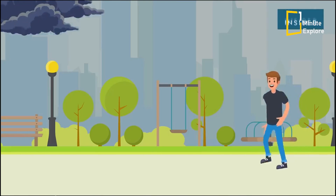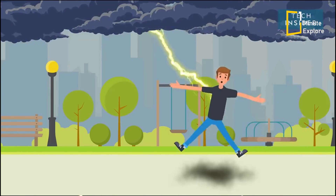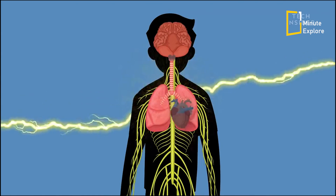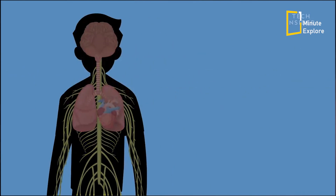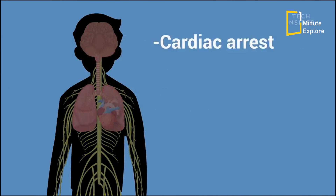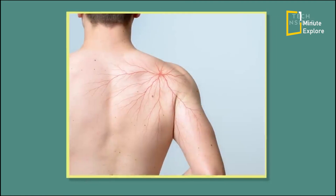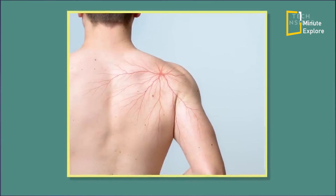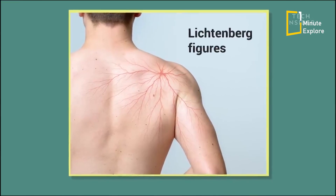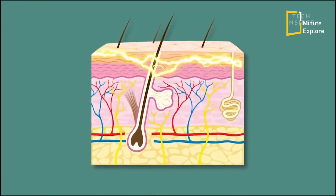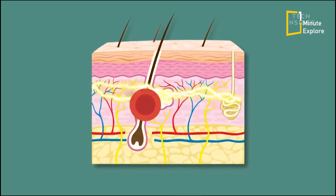But sometimes lightning strikes a person. In that case, the electricity goes through the vascular and nervous system, and people can die from it. They may also have a Lichtenberg figure on their skin — a reddish mark caused by the bursting of blood vessels from the lightning discharge.